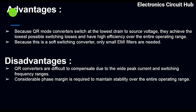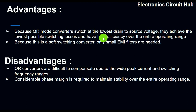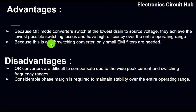The advantages of quasi resonant mode: because QR mode converters switch at the lowest drain-to-source voltage, they achieve the lowest possible switching losses and have high efficiency over the entire operating range. Because this is a soft-switching converter, only small EMI filters are needed.